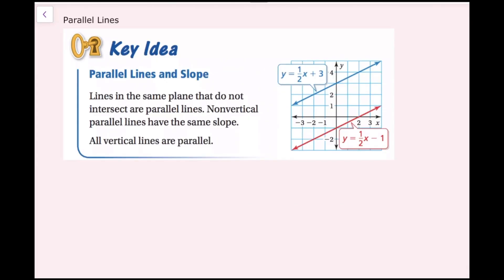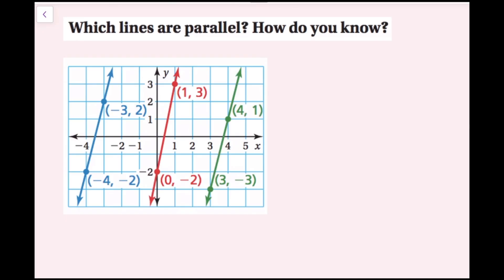Now we're going to talk about parallel lines. Lines in the same plane that do not intersect are parallel lines. Non-vertical parallel lines have the same slope, and all vertical lines are parallel. So if you can calculate the slopes and they're the same, then you have parallel lines. If you see two vertical lines, you also know they are parallel — assuming they are different lines. In this example, we need to figure out which of the three lines are parallel.